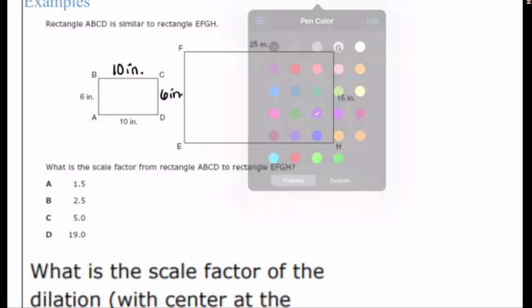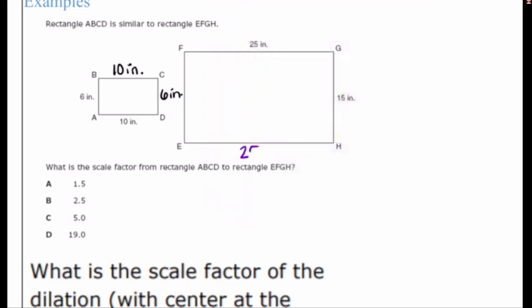And same thing here in this rectangle, EFGH. This side is 25 inches, so the side that's opposite of it is also going to be 25 inches. And over here, we have 15 on this side, so this side over here is also going to be 15. So now from here, we're trying to figure out what the scale factor is. It says rectangle ABCD is similar to rectangle EFGH. What is the scale factor from rectangle ABCD to EFGH? Which means ABCD has to be our pre-image.